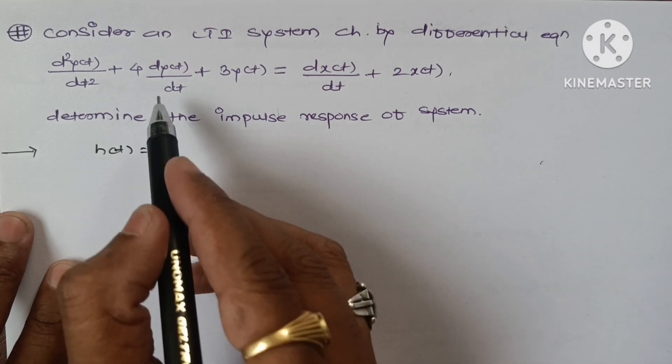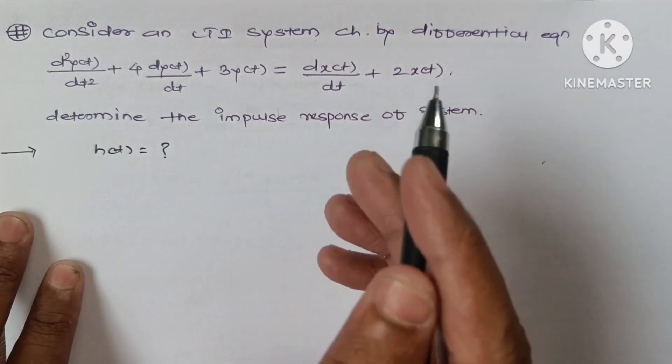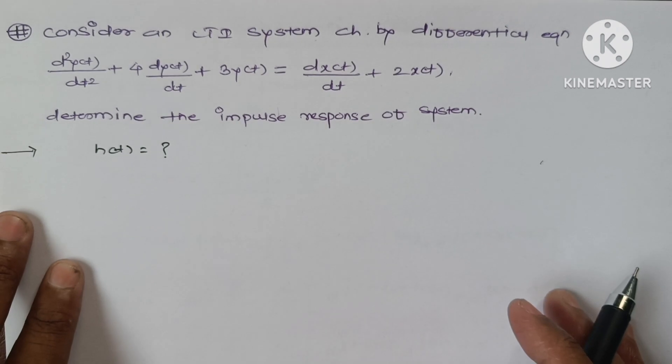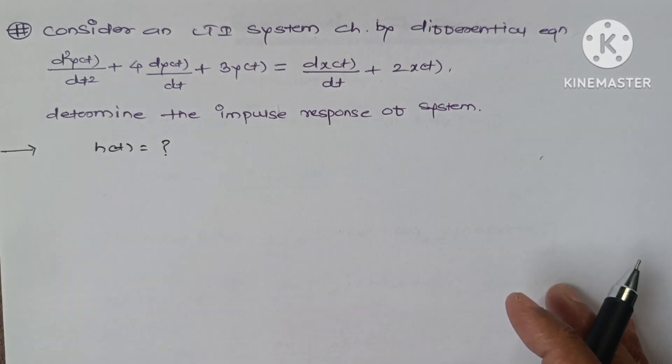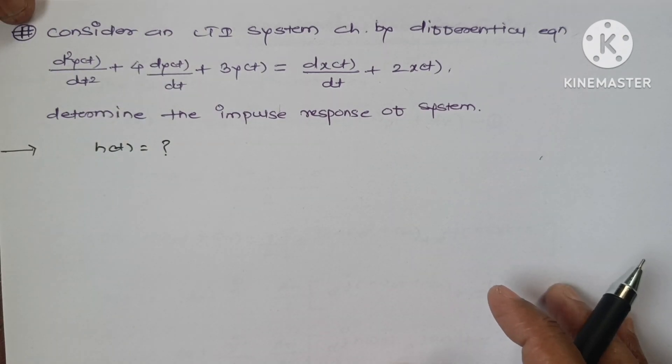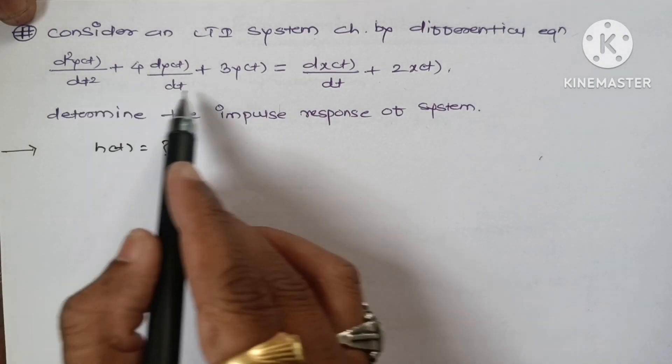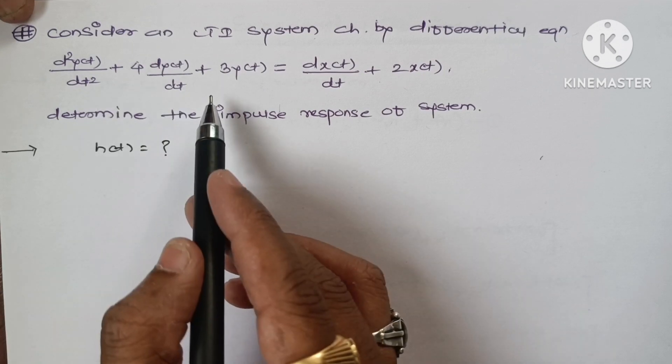Consider an LTI system characterized by differential equation as d²y(t)/dt² + 4dy(t)/dt + 3y(t) = dx(t)/dt + 2x(t). We are asked to determine the impulse response of the system, that is, we have to find out h(t). So to convert this to h(t), first we have to simplify this equation either in terms of y(jω) or x(jω) form.